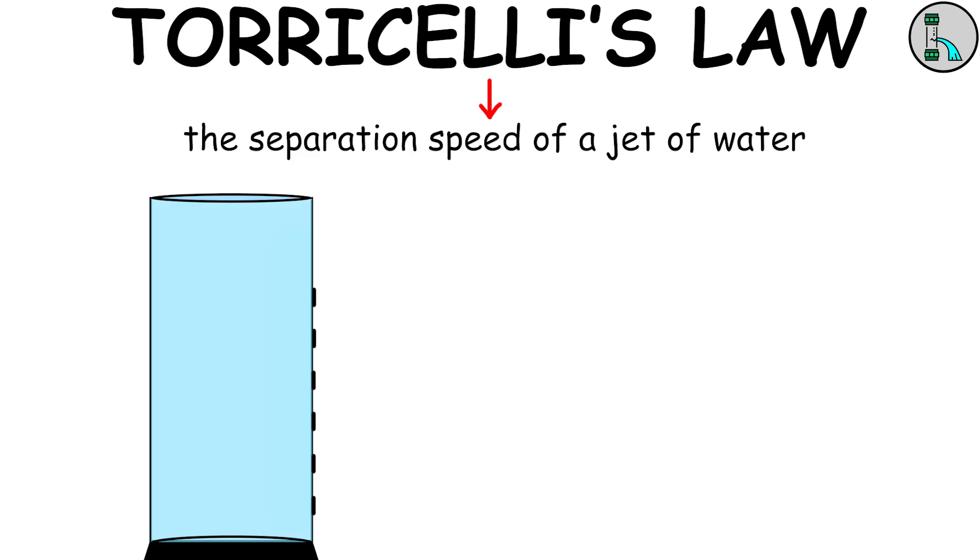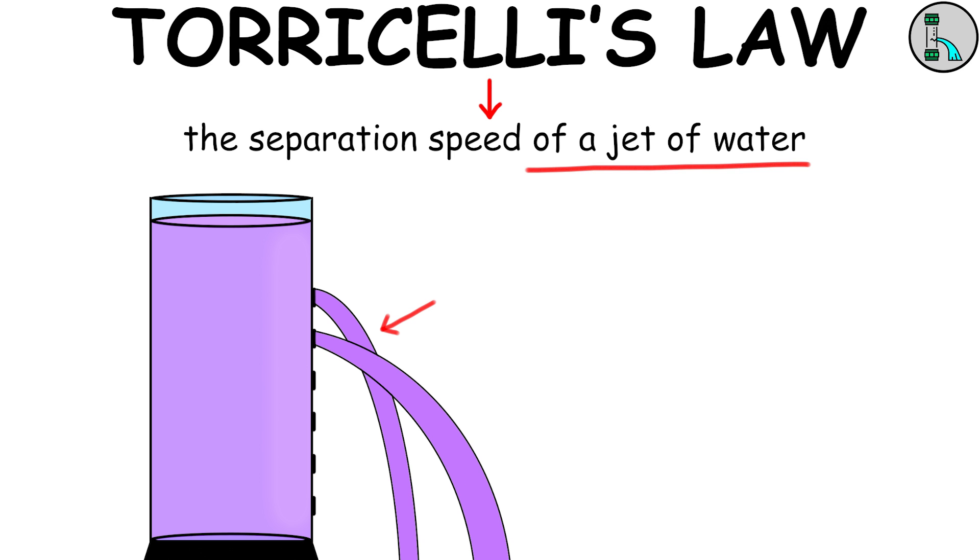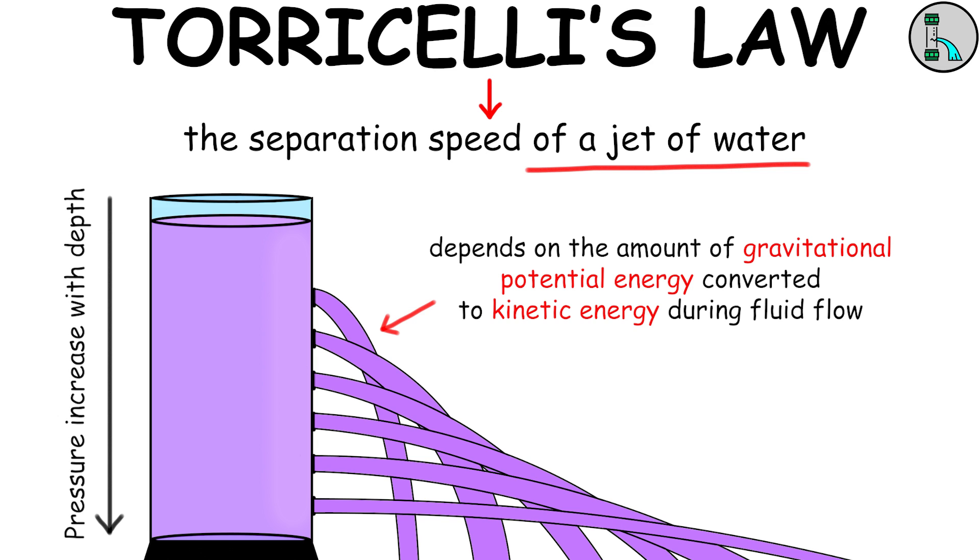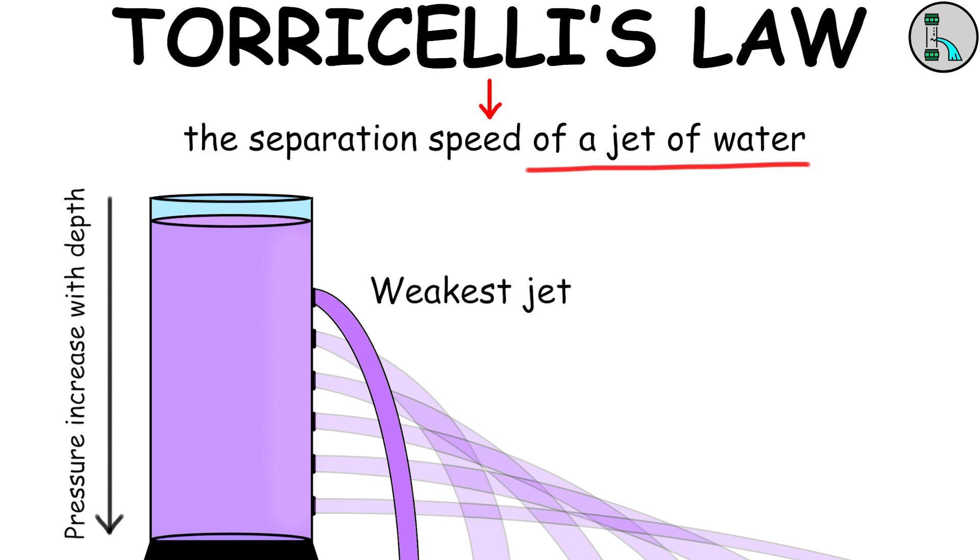Torricelli's Law describes the separation speed of a jet of water. This law suggests that the speed of the jet depends on the amount of gravitational potential energy converted to kinetic energy during fluid flow. If you lower the jet, the speed will decrease. If you raise the jet, the speed will increase.